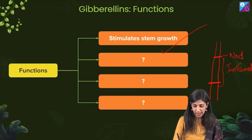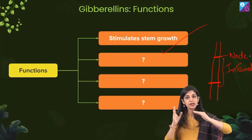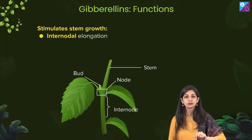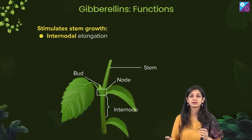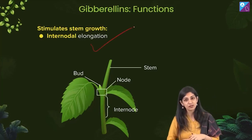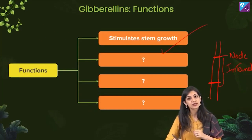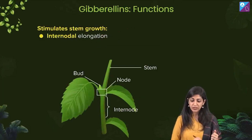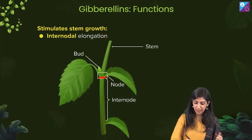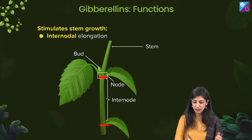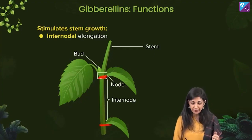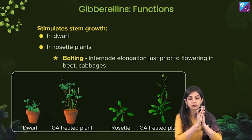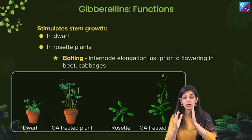The node is the region where leaves arise; the internode is the region between two nodes. What does gibberellin do to cause stem growth? Internode elongation. The longer the internodes, the longer the stem. So this is the node where leaves emerge, this is another node, and the interval between them is the internode. How is this concept useful? In dwarf plants.